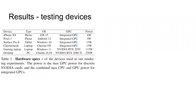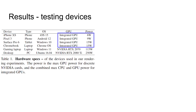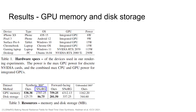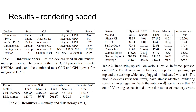We have tested our method on a variety of devices, including two phones, a tablet, a Chromebook, a gaming laptop, and a desktop. The mobile devices only have low-power integrated GPUs. We compare with SNeRG, as it is the only NeRF model that can run on common devices. Our method consumes much less GPU memory compared to SNeRG.